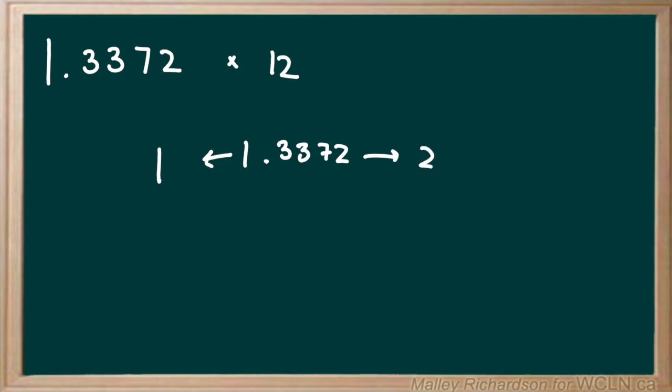Now we take our rounded down number which is 1 and our rounded up number which is 2 and we multiply it by 12. So 1 times 12 gives us 12 and then 2 times 12 gives us 24. That means our answer should be anywhere between 12 to 24.